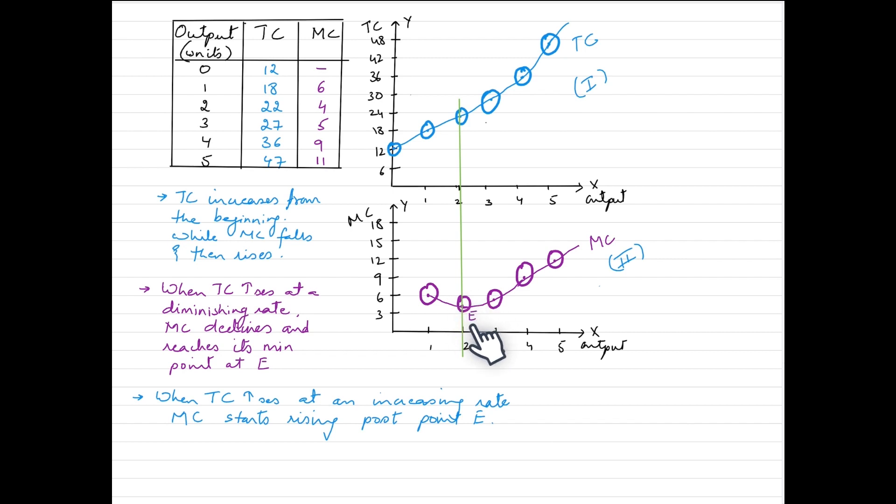While falling, marginal cost would hit its minimum point which is located at point E. This is at the second unit, which in this schedule is at 4, which is actually its minimum point. Thereafter, marginal cost has started to rise.